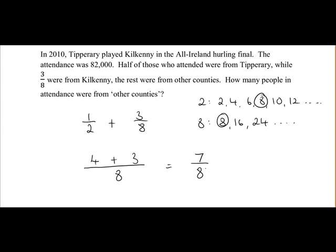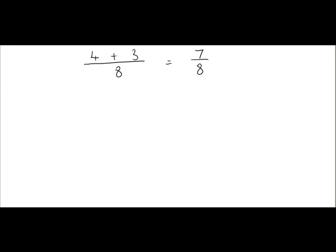So if seven-eighths of the attendance were from Tipperary and Kilkenny, and the rest were from other counties, that means one-eighth of the attendance was from other counties. So seven-eighths were from Tipperary and Kilkenny, so what's left over is one-eighth from other counties. So what we need to do is find one-eighth of the attendance.